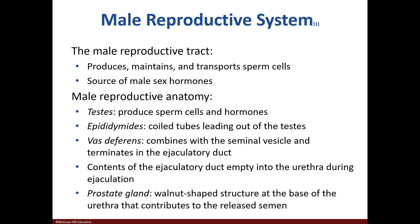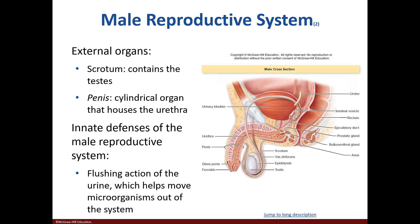The male reproductive system functions to produce and transport sperm. The testes produce both hormones and sperm. It also consists of the epididymis, vas deferens, and prostate. The external organs include the scrotum and penis. The urine transported in the system helps to flush microbes.